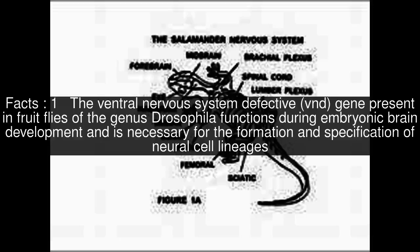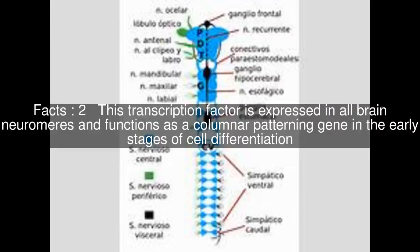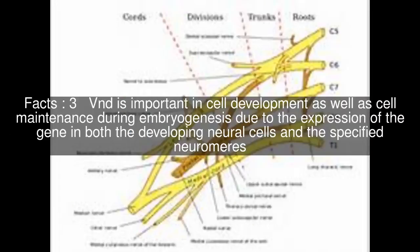The ventral nervous system defective, VND, gene present in fruit flies of the genus Drosophila functions during embryonic brain development and is necessary for the formation and specification of neural cell lineages. This transcription factor is expressed in all brain neuromers and functions as a columnar patterning gene in the early stages of cell differentiation. VND is important in cell development as well as cell maintenance during embryogenesis due to the expression of the gene in both the developing neural cells and the specified neuromers.